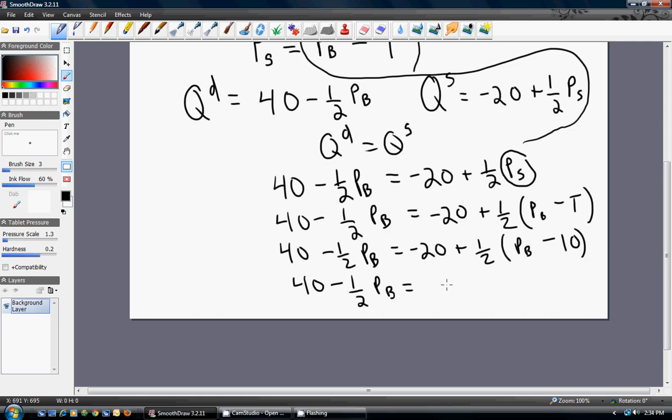We're going to get minus 25 plus one half the price that buyers pay. This minus 25 is coming from one half times minus 10. That's just minus 5. So minus 20 plus a minus 5 is minus 25.